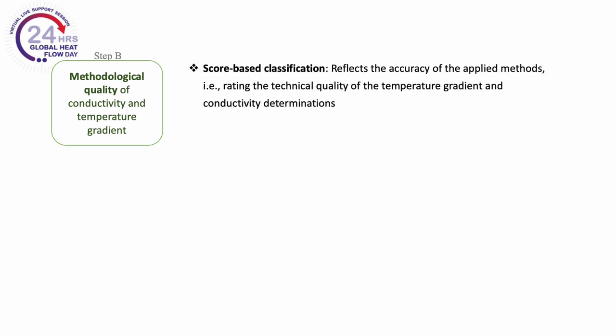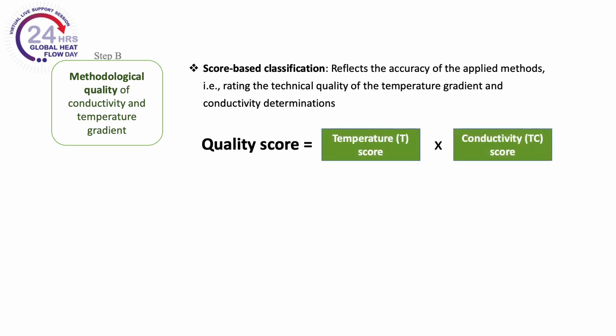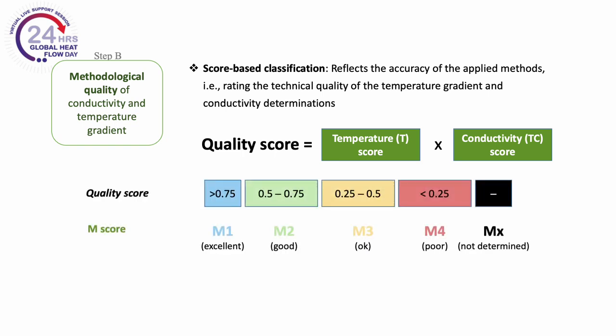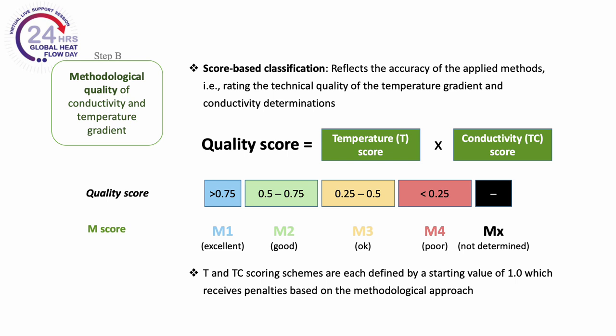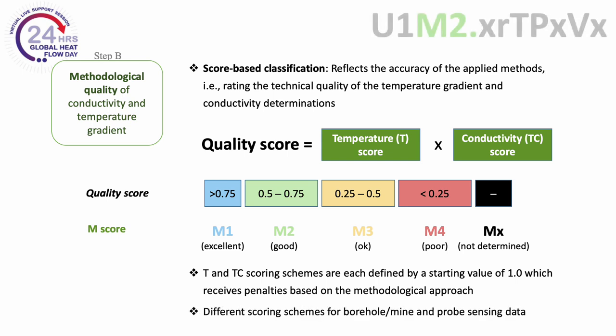The second step requires assignment of a quality score to the temperature gradient and conductivity measurement methods. The M score reflects the methodological accuracy and the technical reliability of the measurements. The M score is classified based on a quality score, which in turn is a product of a scoring of temperature and conductivity methodologies. The highest score is attributed to the best quality methodological approach, while methodological weaknesses result in subsequent penalties. There are different scoring schemes for borehole and mine data and for probe sensing data.